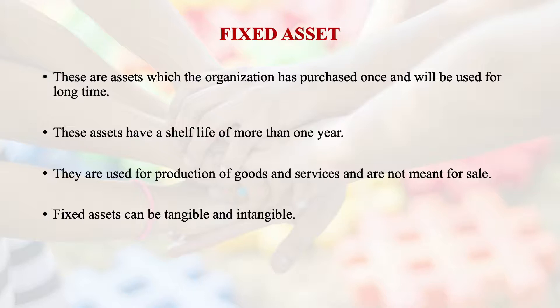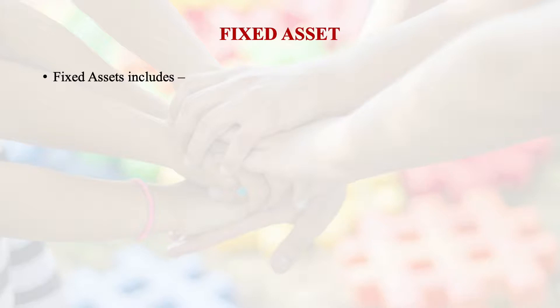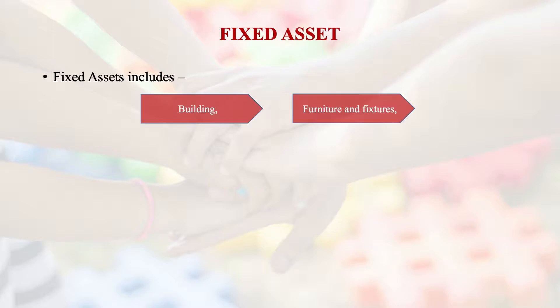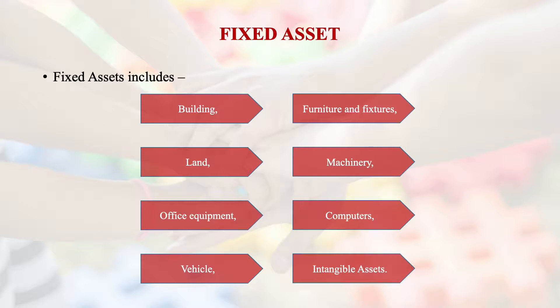Intangible fixed assets include patents, copyrights, and credibility. For tangible assets, depreciation can be charged annually over the asset's useful life — a common example being automobiles. The list of fixed assets for an organization includes building, furniture and fixtures, land, machinery, office equipment, computers, vehicles, and all kinds of intangible assets.